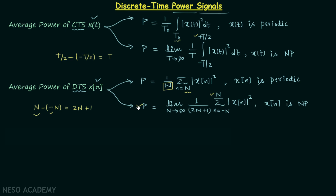This covers the two formulas needed to calculate the average power of a discrete time signal. Now, a signal is said to be a power signal when the average power is finite — meaning the average power is greater than zero but less than infinity. When the average power is finite, the total energy is infinite. Whenever the average power is finite, we say the signal is a power signal. Remember this condition.